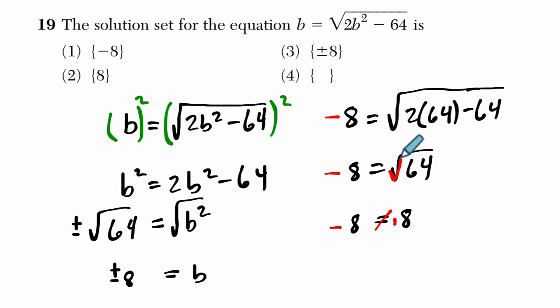And the square root of 64, we assume the positive root, right? We're only getting one output, and that's positive 8. That can never equal negative 8. So therefore, that's not a solution. The only solution then would be 8, or choice 2.